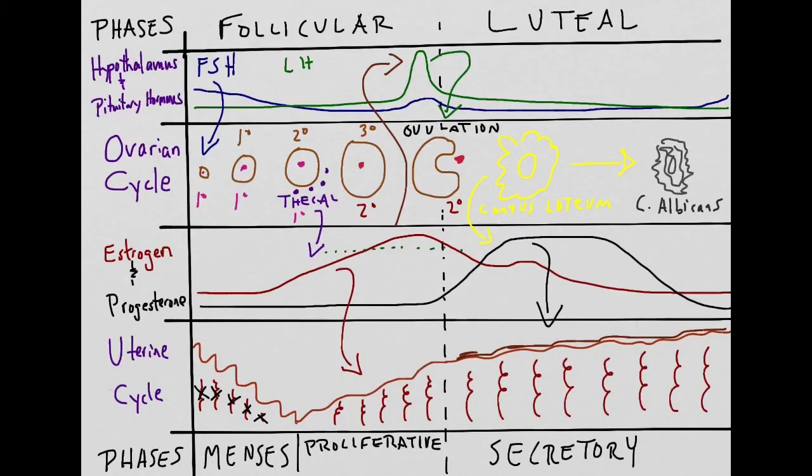If there is no fertilization and no zygote formed, the corpus luteum will turn into the corpus albicans 10 to 12 days after ovulation. Progesterone and estrogen levels will decrease and the menses phase will begin all over again. Thank you for watching and I hope this helps you.